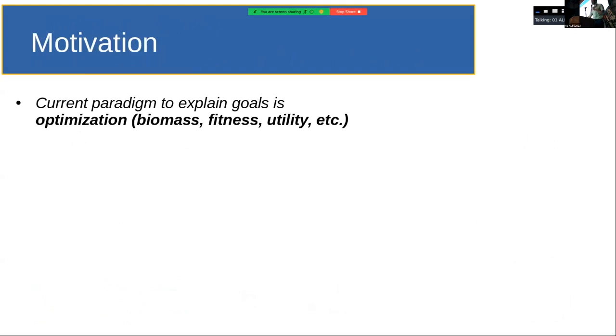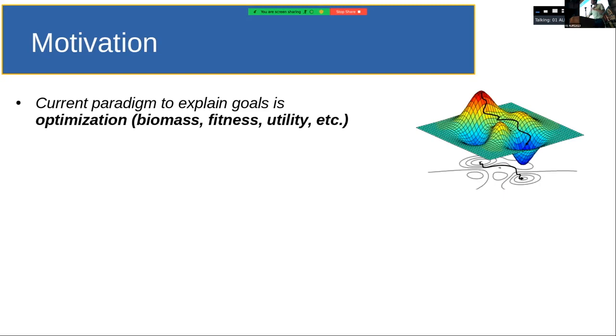It starts with this problem that the current paradigm of science in general seeks for answering questions by finding optimization processes. So if we think of cells, typically we study them in biomass, like optimal productive conditions or ecosystems in fitness, economics in expected utility and so on. So this is pretty much like the way we think of any phenomenon in general. But this leaves apart the problem of emergence.